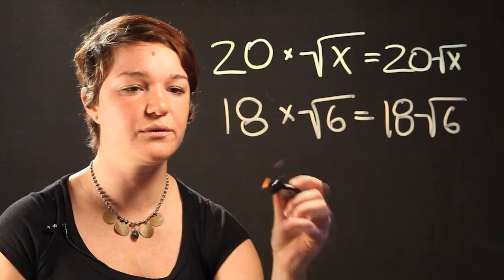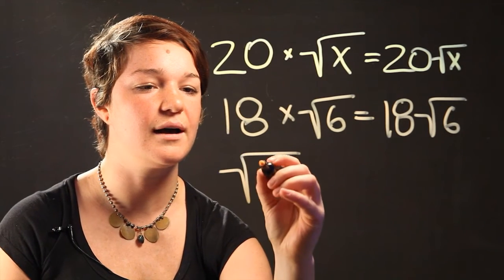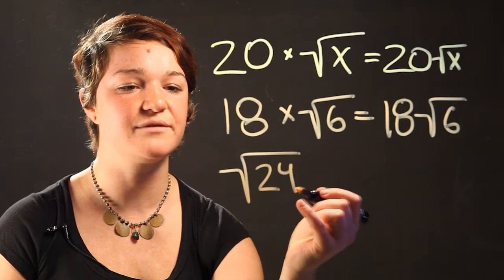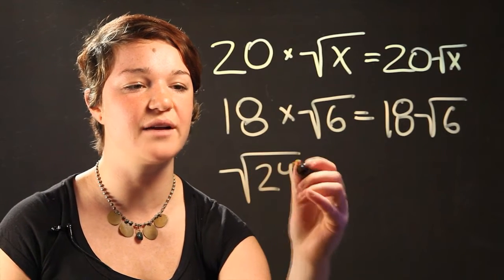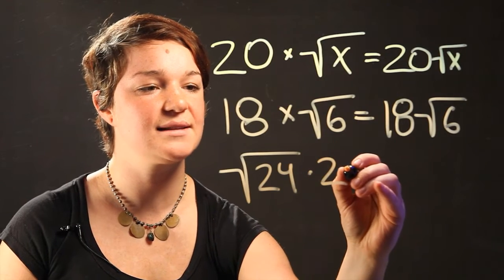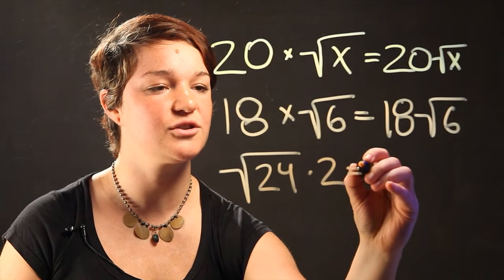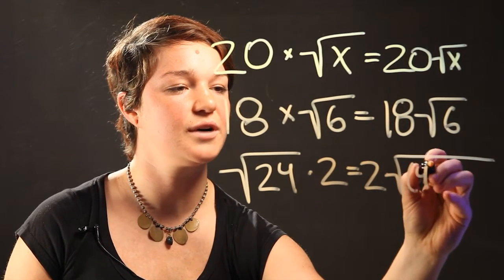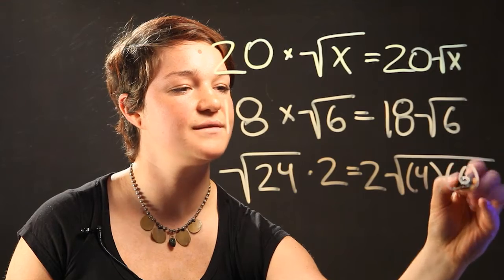So a square root such as the radical of 24 can be simplified further. If we multiply the radical of 24 times 2, we realize that it's the same as saying 2 times the radical of 4 times the radical of 6.